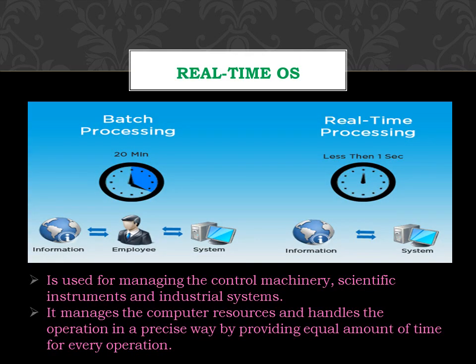Real-time operating system is used for managing control machinery, scientific instruments, and industrial systems. It manages computer resources and handles operations in a precise way by providing equal amounts of time. Processing time requirements are calculated in tens of seconds increments of time. It is a time-bound system defined as a fixed-time constraint, and processing must be done inside the specified constraint; otherwise the system will fail.